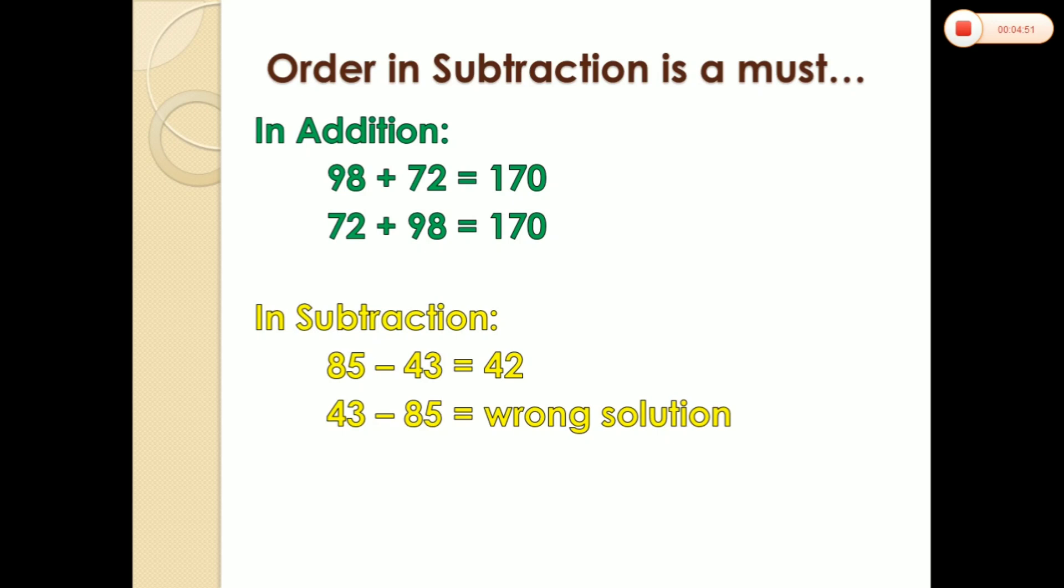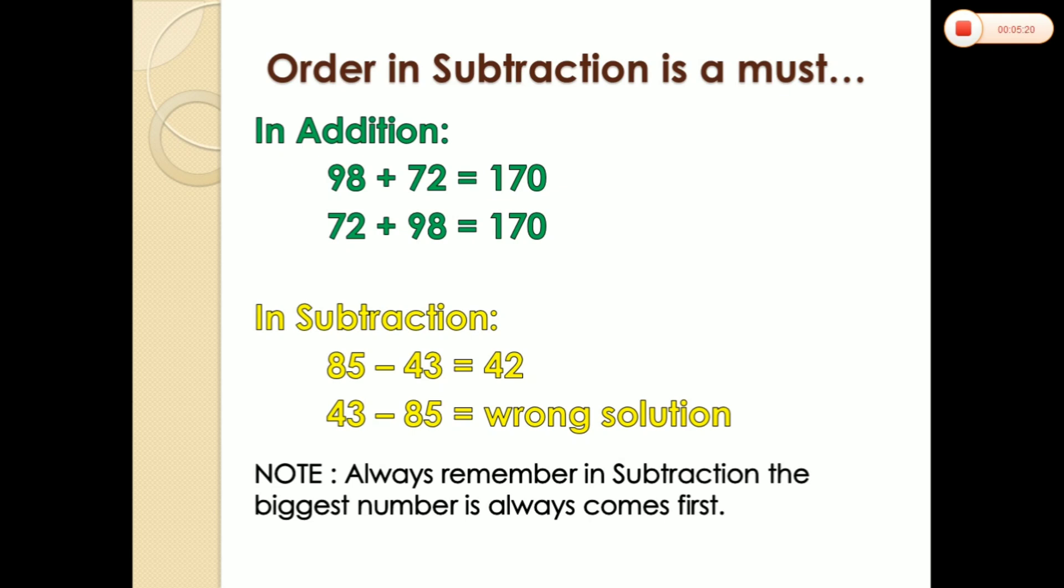The example 85 minus 43 equals 42 is correct. But if we change their position, you will get the wrong solution. Why? There is one rule of subtraction: the biggest number always comes first. 43 is less than 85, so it's not the biggest. If you subtract incorrectly, you will get the wrong solution, even using a primary-level calculator.